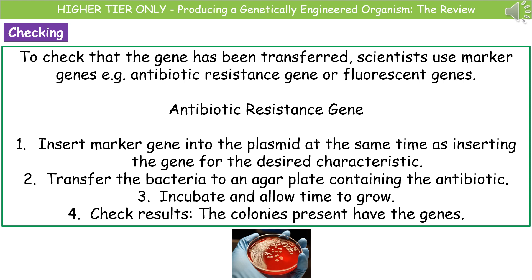If we use an antibiotic resistance gene as our marker gene, we insert it into the plasmid at the same time as the gene for our desired characteristic. We then take those bacteria and transfer them onto an agar plate that contains the antibiotic that the gene is resistant to. After incubation, any colonies present on that agar plate will have the genes — we assume if they've got the antibiotic resistance gene, they've also got our desired characteristic gene — so we select those colonies and allow them to replicate in large numbers.